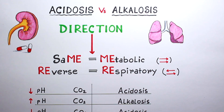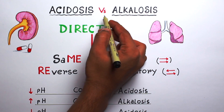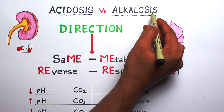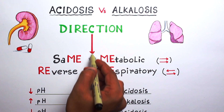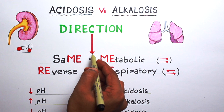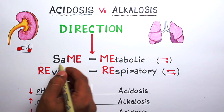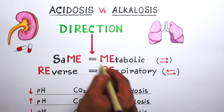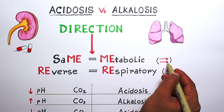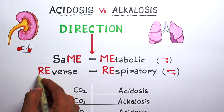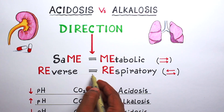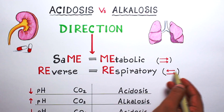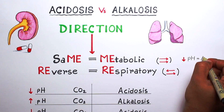It is for those who are still struggling with simple acidosis and alkalosis questions. It's really difficult to remember, but I have found a mnemonic. All you have to do is remember the direction of the arrow — the arrow signifies increase or decrease in the level of pH and CO2. If the direction of the arrows are the same, then it is metabolic, and if the direction of the arrows are reverse, then it is respiratory.